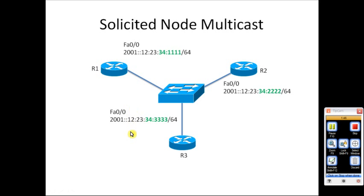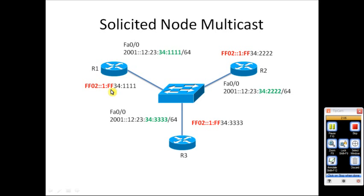Whenever a host, router, or node is configured with an IPv6 address, it automatically becomes a member of a multicast group that starts with the prefix FF02::1:FF. This prefix indicates a multicast address in IPv6 addressing. For example, looking at this multicast IPv6 address, the prefix is built as FF02::1:FF.